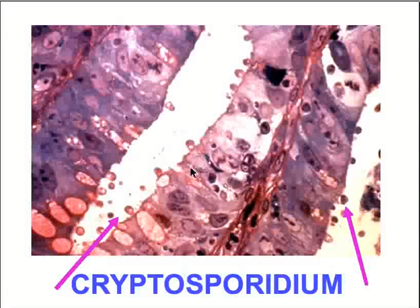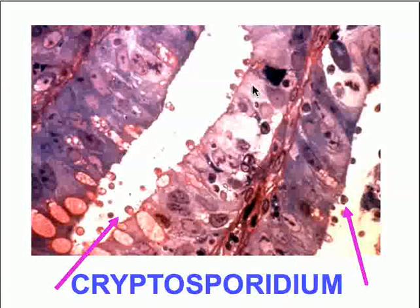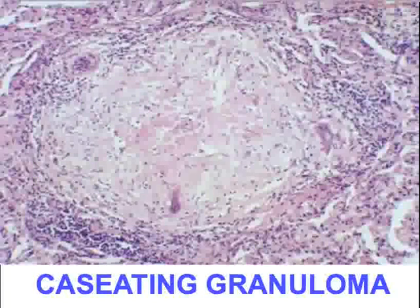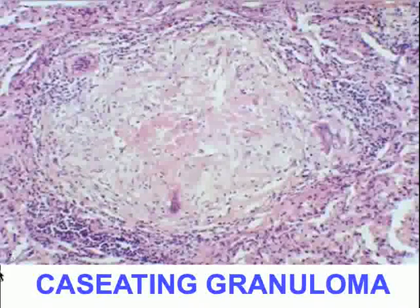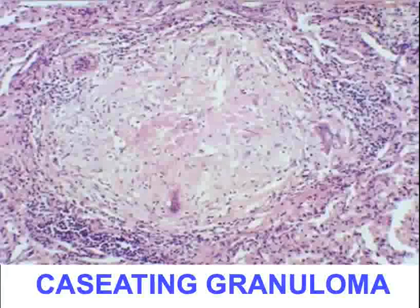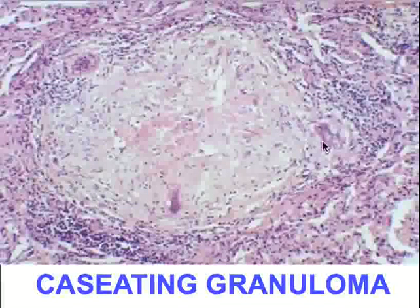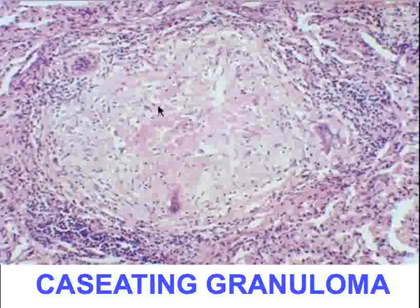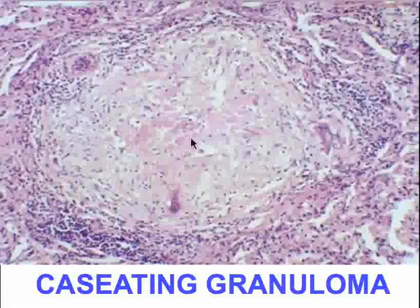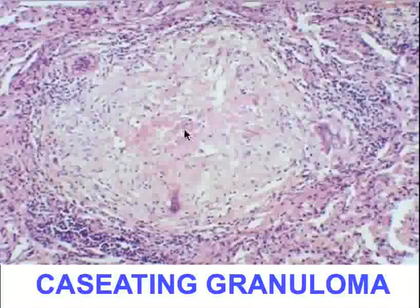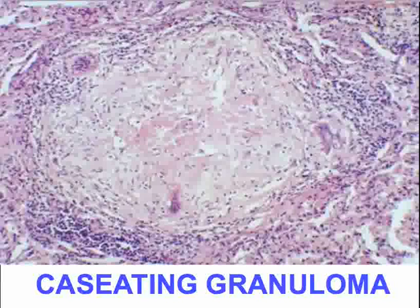Cryptosporidium is an organism that adheres to the epithelial cells of the large bowel, causing dysfunction and the main symptom of diarrhea. TB, or caseating granulomas, is very common with HIV patients. Microscopy shows multinucleated giant cells, caseous necrosis in the middle of the granuloma, and a lymphocytic cuff of reaction around the histiocytic or macrophage clusters that form the granuloma.